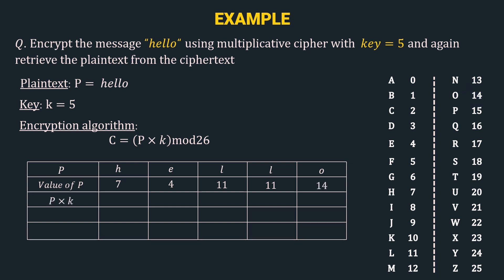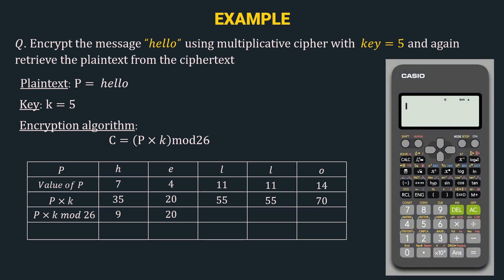The next row is p × k. We multiply key k = 5 with all values: 7 × 5 = 35, 4 × 5 = 20, 11 × 5 = 55, again 55, and 14 × 5 = 70. The next row is p × k mod 26. So 35 mod 26 = 9; 20 mod 26 = 20 since 20 is less than 26; 55 mod 26 = 3 because 26 × 2 = 52 and 55 − 52 = 3. We can calculate the modulus manually or use a scientific calculator.